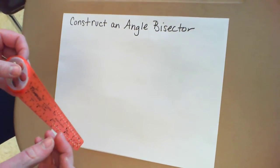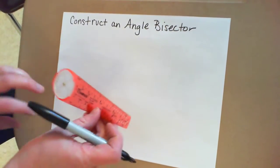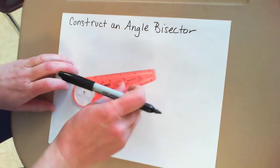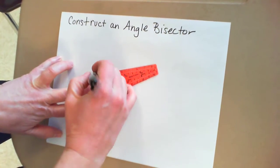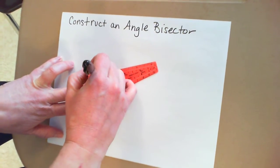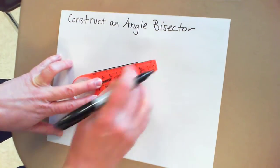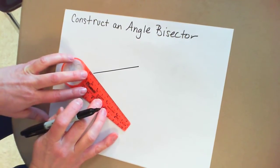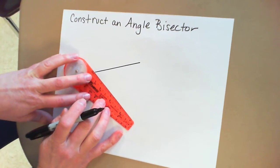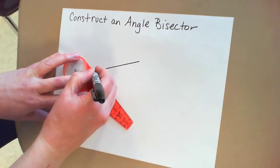I'm going to show you how to construct an angle bisector. First you need an angle, so I'm going to use my straight edge. And I need two sides to make an angle.